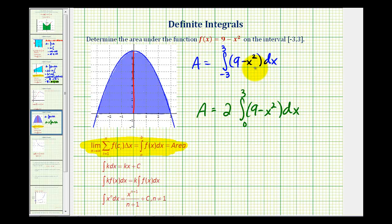But I think we'll go ahead and leave it in the original form to determine the area. Now we'll find the antiderivative of nine minus x squared. That would be nine x minus x cubed divided by three.